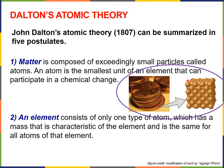The second postulate of atomic theory says that an element consists of only one type of atom, which has a mass characteristic of that element and which is the same for all atoms of that element. So for copper, all the atoms that make up a piece of copper are the same — they share the same mass and many other characteristics. Today we know this postulate isn't entirely true, which we'll see when we learn about isotopes, but at the time Dalton's postulate was pretty close to correct.